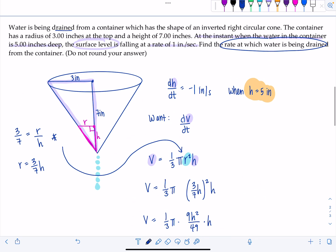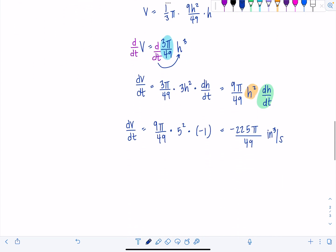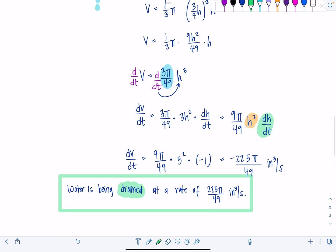They already said the word drained, which means they know that the volume is changing in the negative direction. So just to be super precise, I'm going to say water is being drained at a rate of 225π over 49 inches cubed per second. I'm not going to put a negative because the word drained already includes the negative sign. If the problem had used a neutral term, like at what rate is the water changing, changing is neutral, then you would put the minus sign in your answer. But when they say drained, we already know that means going down. So don't put an extra negative. Depending on how picky your teacher is, they may or may not take points off. They probably will. So be on the lookout.